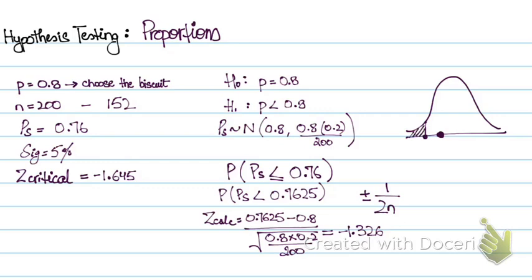So this was my critical region, but my calculated Z calc lies in the acceptance region that is over here. So I can accept my null hypothesis. So I will say that there is not enough evidence to say that the probability has changed. That is, we accept the manufacturer's claim that 8 out of 10 people do prefer his brand of biscuit over other brands.